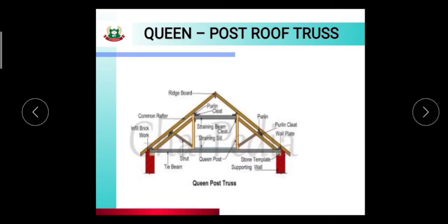Queen post roof truss image. This is a ridge board, common rafter, infill brick work, then strut and tie beam, queen post, stone template, supporting wall, purlin plate, wall plate, purlin and cleat, and ridge board.